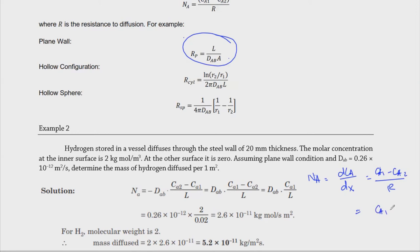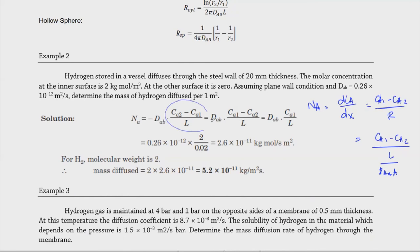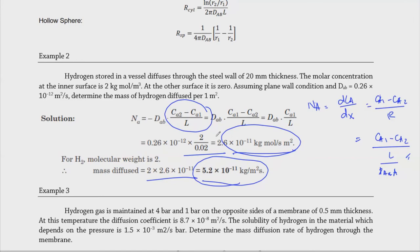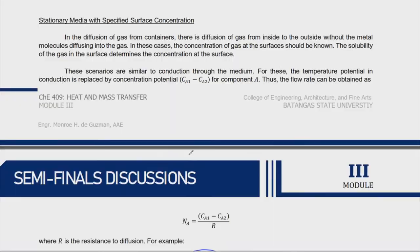Substituting: resistance R = L / D_AB / A for a plane wall. The expression simplifies to (C_A1 − C_A2) × D_AB / L. Plugging in values — C_A1 = 2, C_A2 = 0, L = 20 mm — gives the number of moles per meter squared. Since we want mass of hydrogen, multiply by molecular weight 2, giving 2 × 2.6 × 10⁻¹¹ as the final answer. That's how straightforward stationary media with surface concentration works.